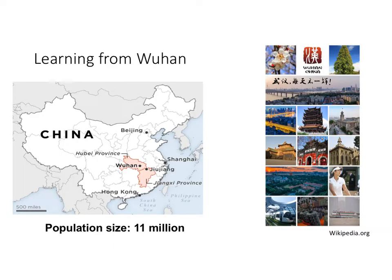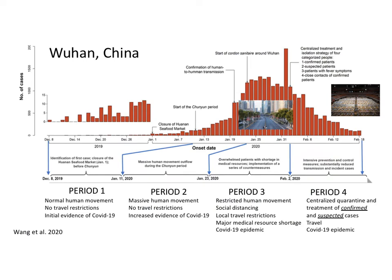To see how this SEIR model concept applies to COVID-19, we're going to go back to Wuhan, which is the capital of Hubei Province in China and the epicenter for COVID-19. I've included pictures of what Wuhan looks like, available on Wikipedia. We're going to look at the epidemic curve for COVID-19 in Wuhan.